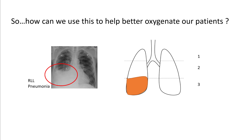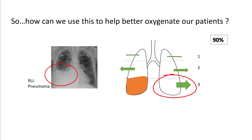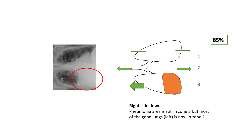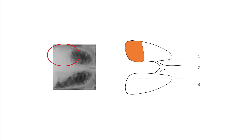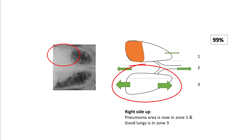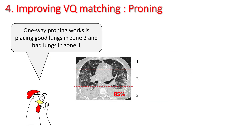So how can we use this information? Say you have right lower lobe pneumonia — oxygenation is happening mostly from the left lower lung and the middle lung zones. If you put this patient right side down, you still have some oxygenation from the right side, but you have put the good lung in zone 1, so oxygenation worsens. If you put the pneumonia in zone 1 and the good lung in zone 3, you will see improved oxygenation. One of the ways proning works is through West lung zone physiology.